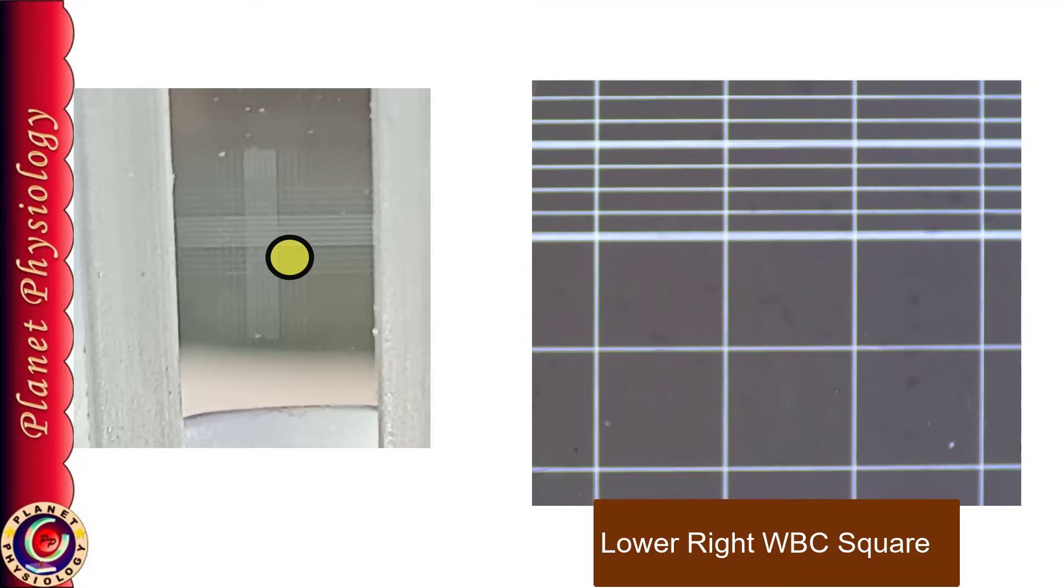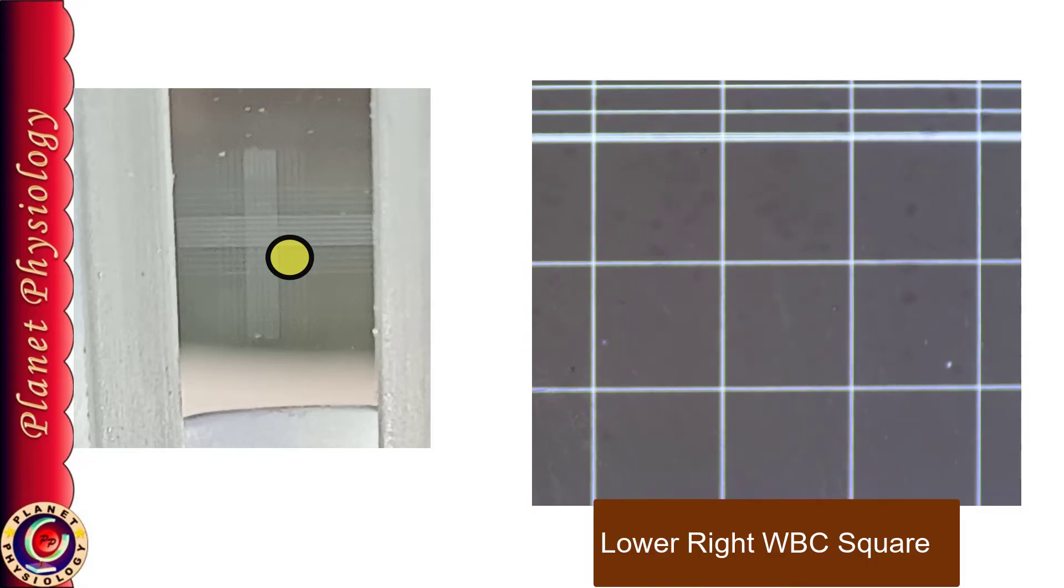So if you are focusing for WBC counting, you just need to focus any of this square under the low power objective. So you can start with any corner square.